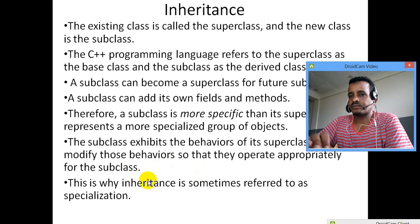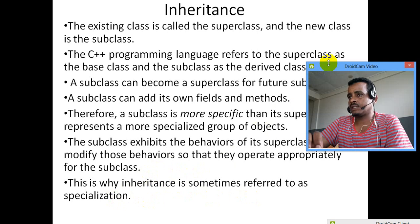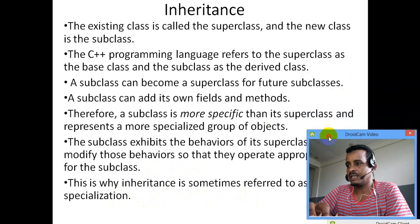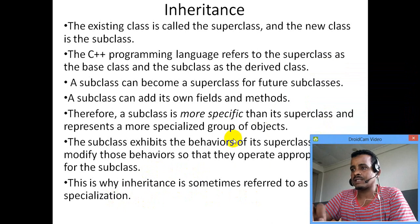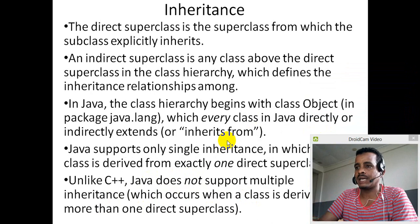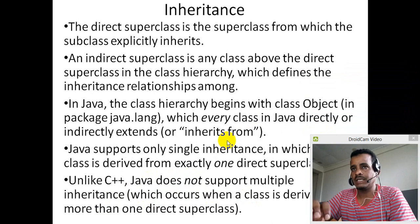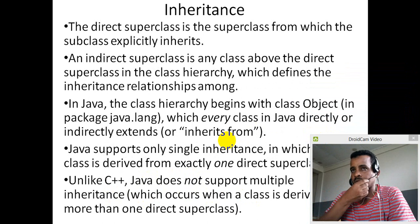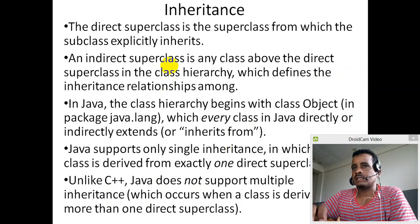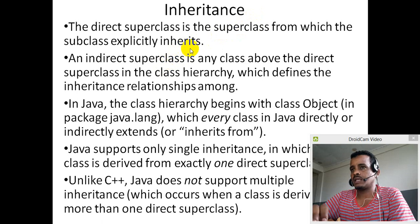Inheritance is specialization. The direct super class is a super class from which the subclass explicitly inherits. A direct super class is directly inherited. An indirect super class is inherited through a class hierarchy.